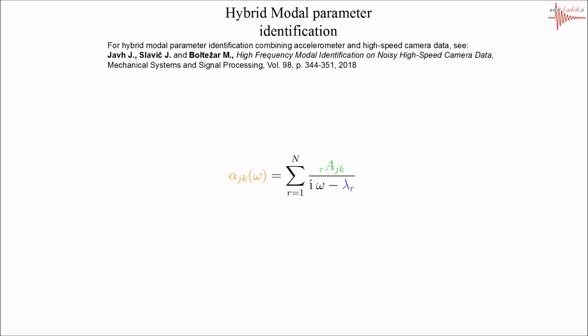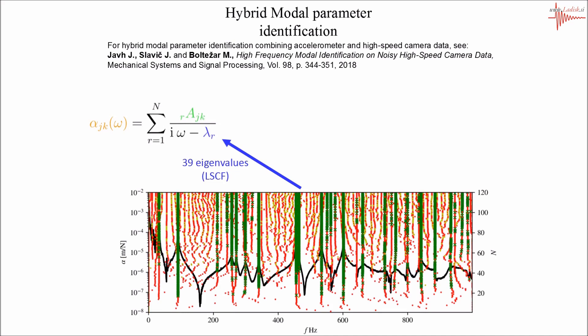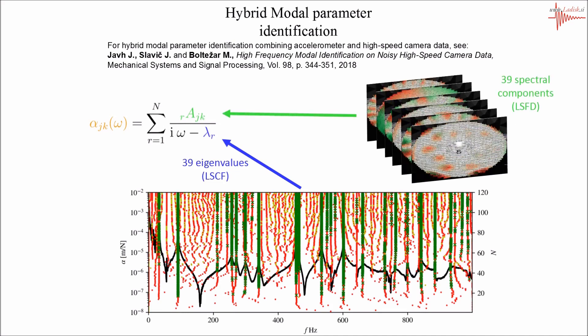The measured responses were later used in model parameter identification. In some of our previous work, we used a hybrid model parameter identification combining high-speed camera data and accelerometer measurements to produce improved results by combining accelerometer eigenvalues and full-field information from the high-speed camera. We used the same approach to identify the parameters using SOFI. First, we identified 39 eigenvalues from the accelerometer measurement. Then we measured the responses close to those eigenfrequencies using SOFI and combined the data to produce full-field mode shapes.